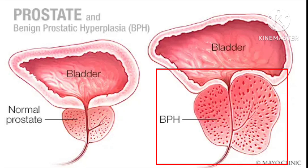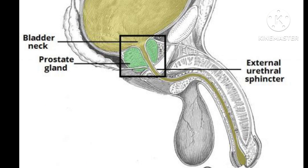The prostate is a walnut-sized accessory gland — we call it a gland because it secretes an alkaline fluid which is enriched in zinc, contributing to the alkalinity of semen. The prostate gland is located in between the bladder and penis, and in front of the rectum.